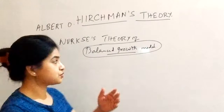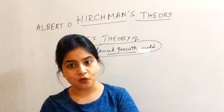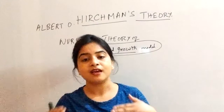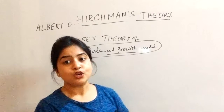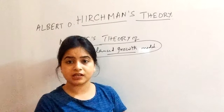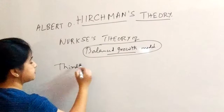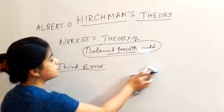Starting with the balanced growth model — every sector equally, in a balanced way, will increase in the same way. Then only the developing countries will be able to achieve growth for their economy. The thing Hirschman is concerned about is third world countries, and he said that these third world countries are not able to attain a balanced growth model.